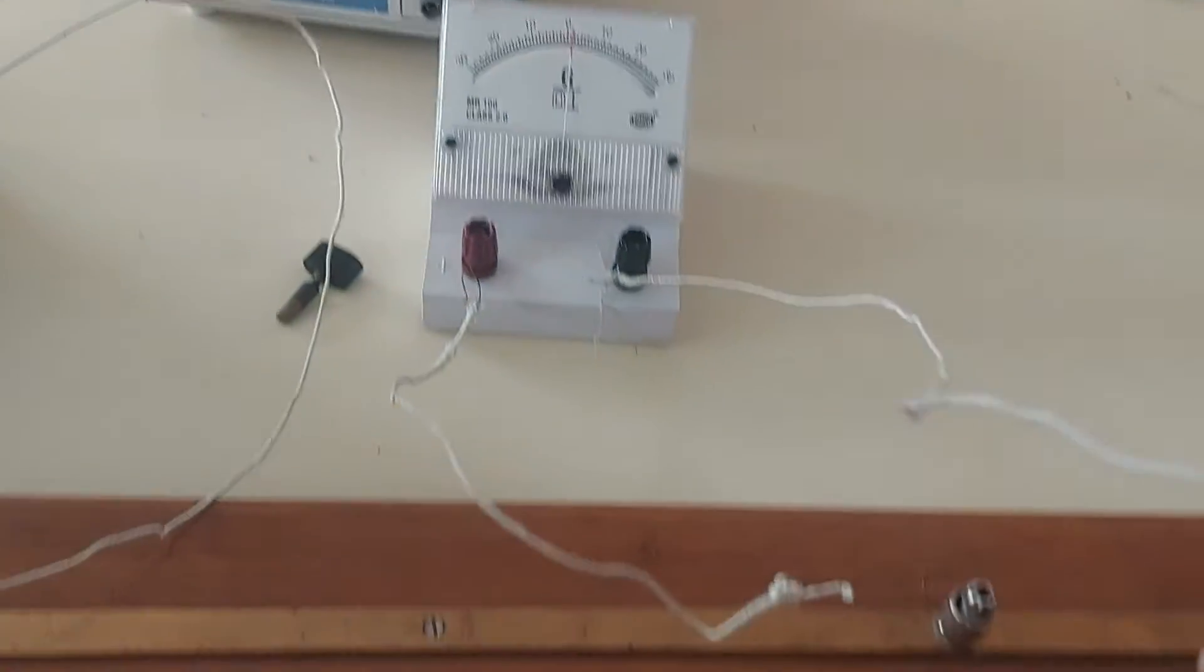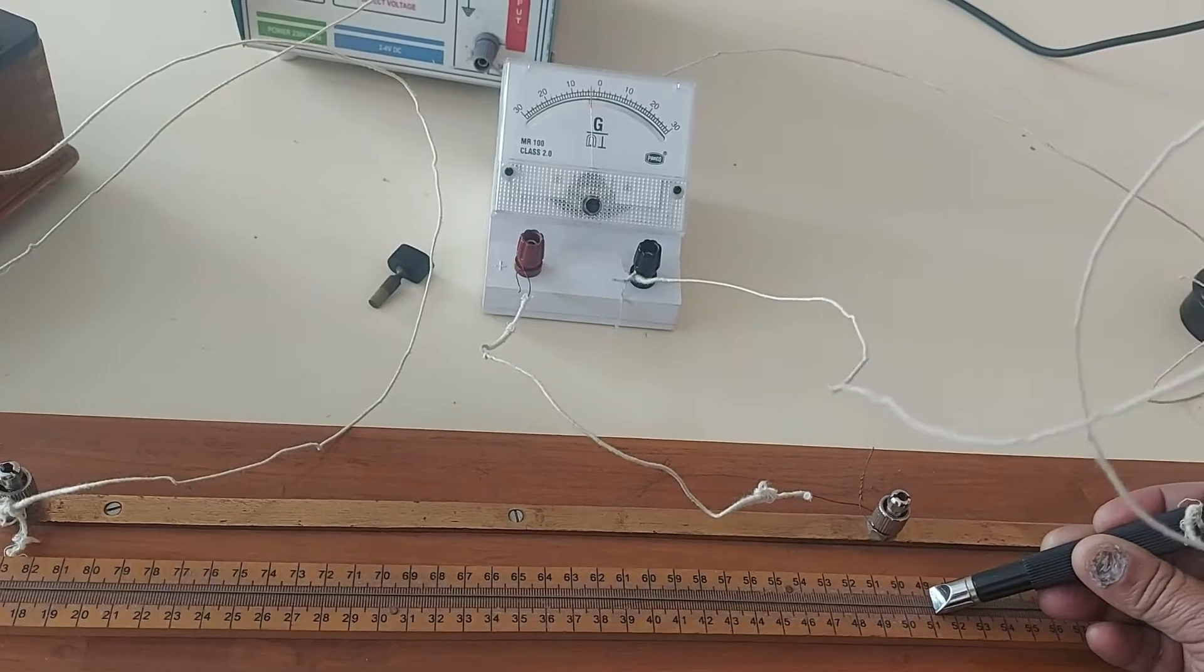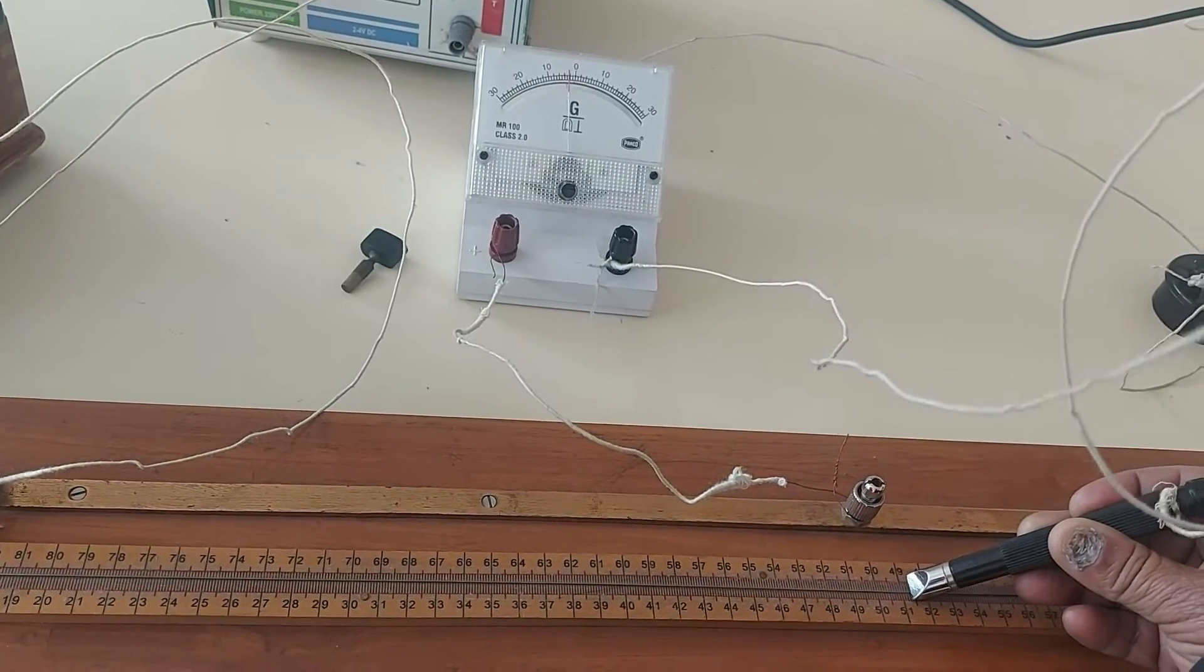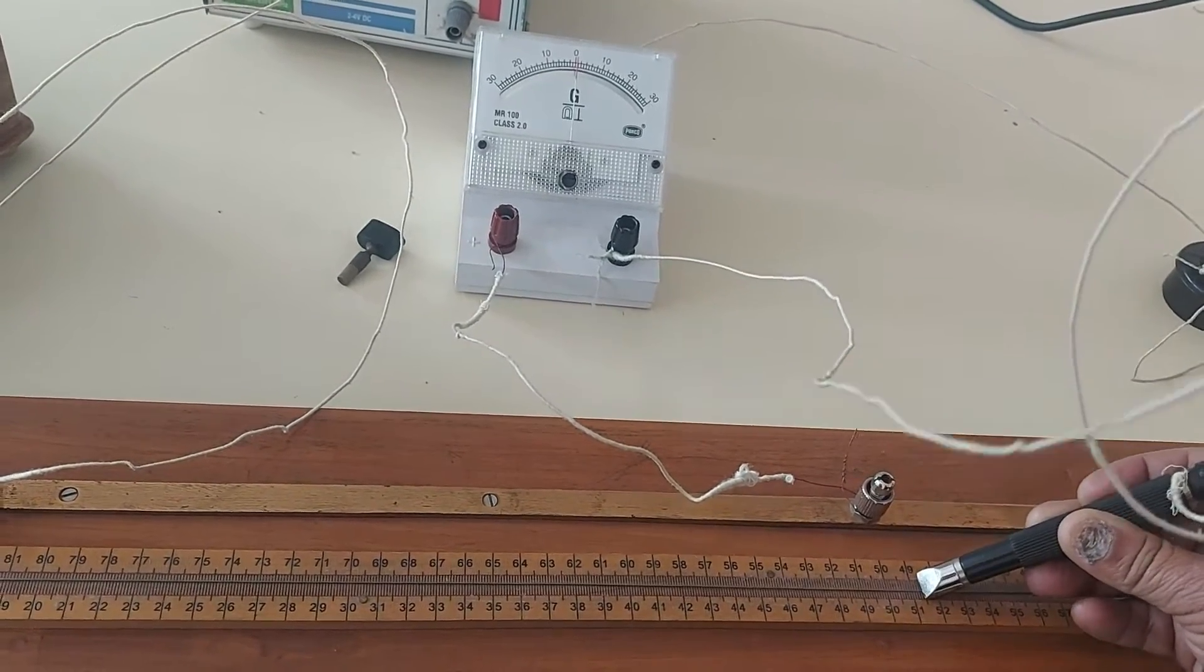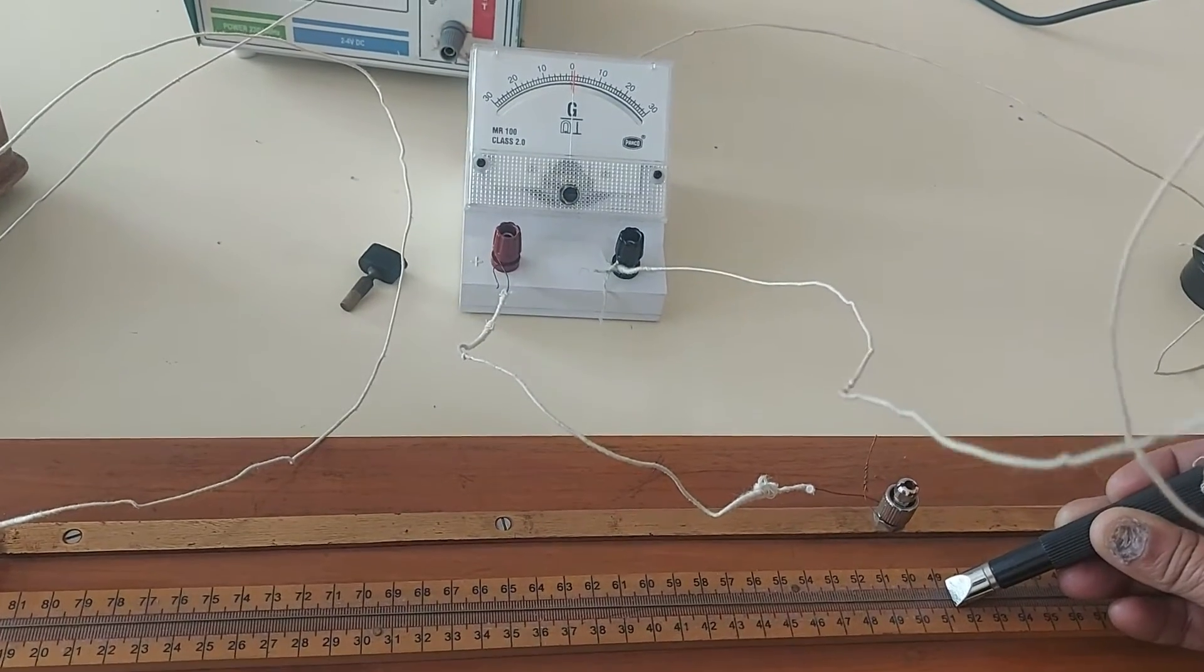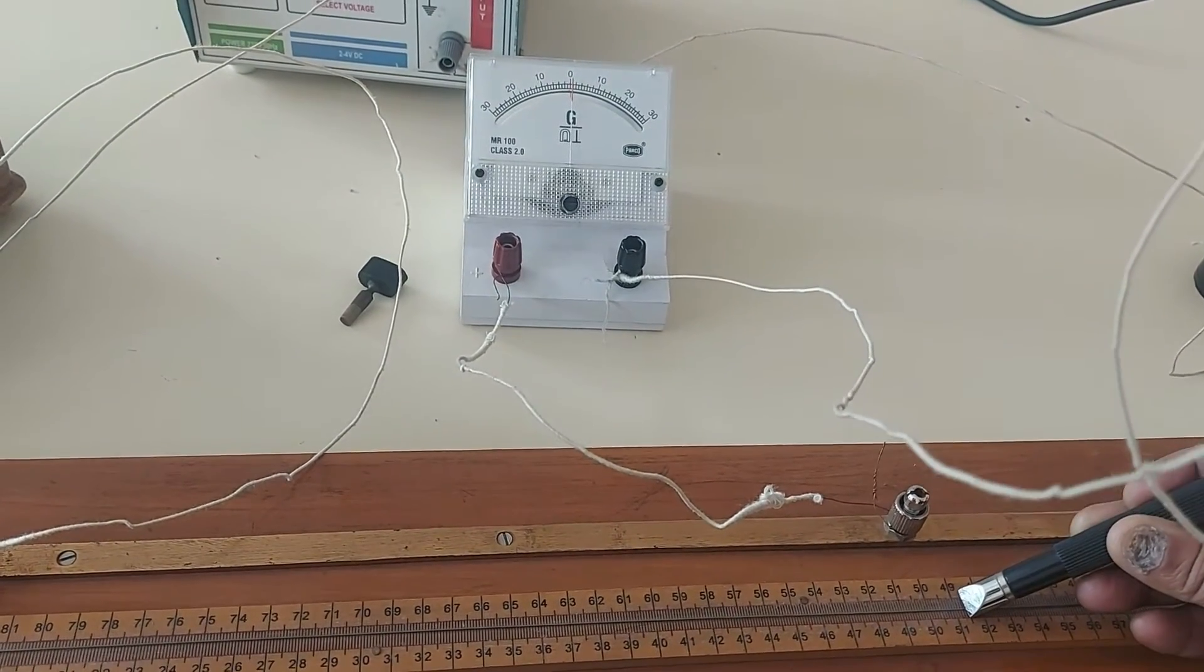After that, gradually move the jockey on the wire so that the deflection in the galvanometer becomes zero. Now in this state, the bridge is called a balanced bridge.